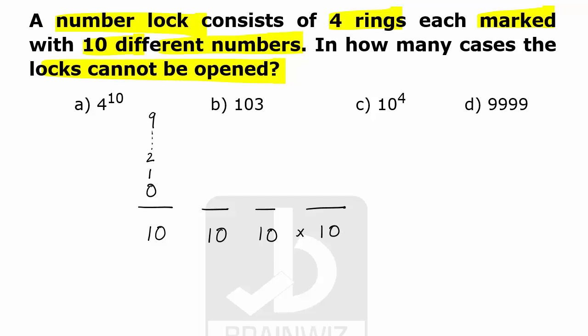So the number of combinations we can have is 10 times 10 times 10 times 10, which equals 10,000 ways you can set the lock. The question asks in how many ways the lock cannot be opened. Here, common sense tells us that you can open a lock only in one way.